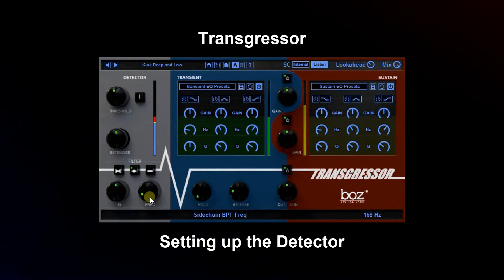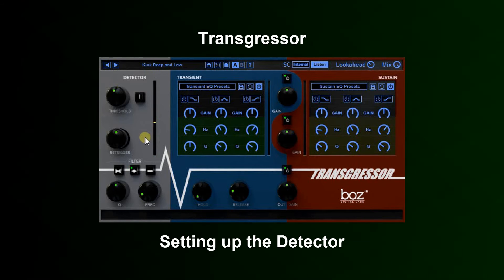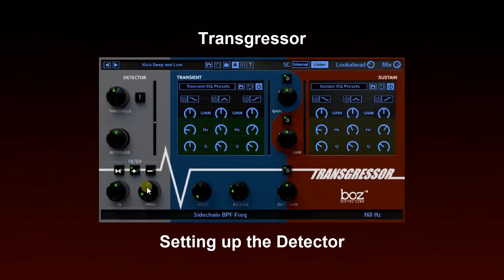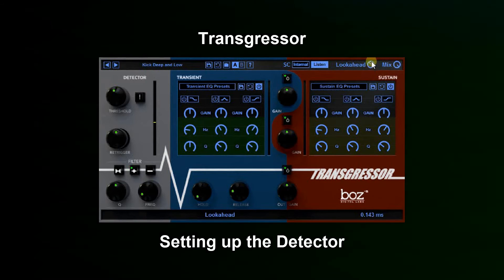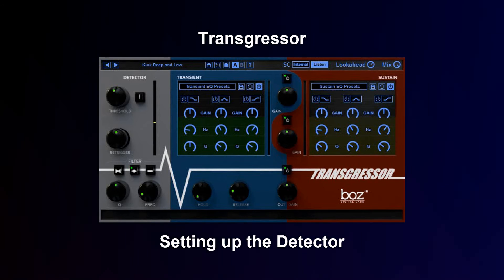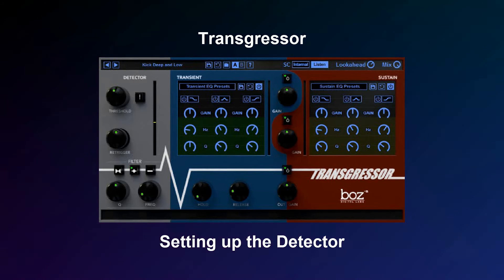It sounds like it's about right there. Now, one thing to note: as you bring this frequency down lower, as you're detecting low frequencies in the transients, it helps to bring up the look ahead time. Low frequencies by nature have slower transients, so having that look ahead time will let it kick in as the transient starts rather than after it's reached the top.